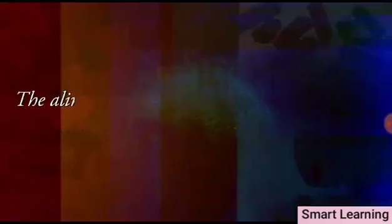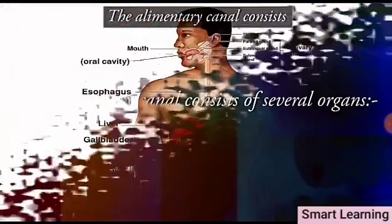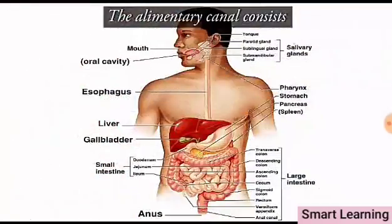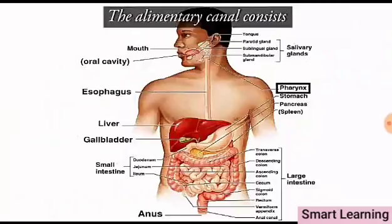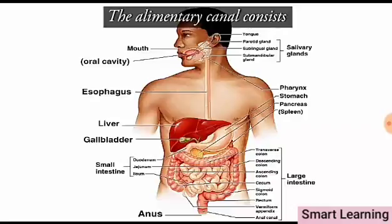The alimentary canal consists of several organs: mouth, buccal or oral cavity, pharynx, stomach, small intestine, and large intestine. Three glands associated with it are: salivary glands in the buccal cavity, liver, and pancreas.